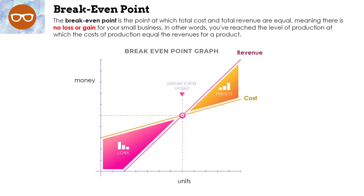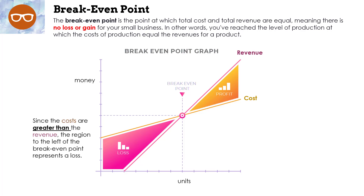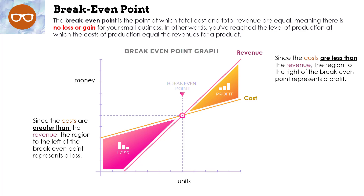What exactly does that mean? It means the cost is more than our revenue, and we don't want that. If we look to the right of the break even point, you're going to notice that the revenue line is above the cost, and that's our profit — that's what we want. The higher the revenue is from the cost, the more money we'll be making. Since costs are greater than revenue, the region to the left represents a loss. Since costs are less than revenue, the region to the right represents a profit.